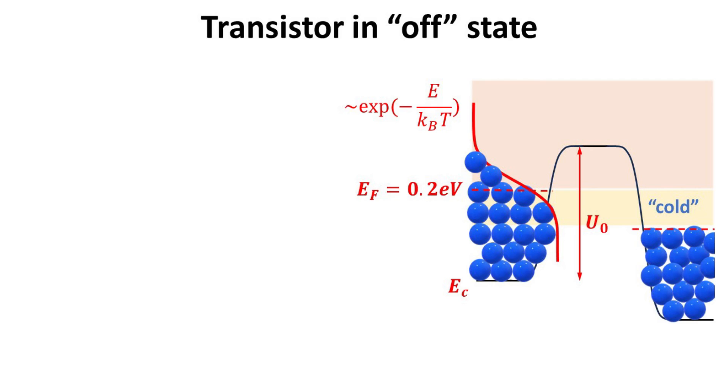Due to finite temperature, the electron distribution has a characteristic Fermi tail, whose distribution at high energies can be described by an exponential function as shown. Current in this off state is dominated by this Fermi tail, and is also known as the subthreshold regime.